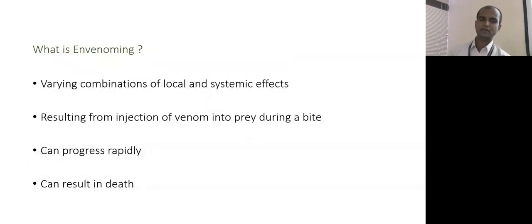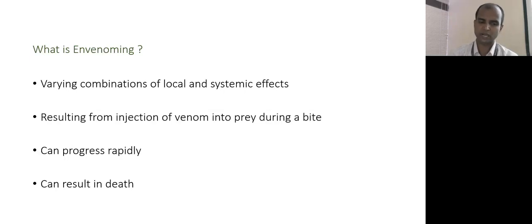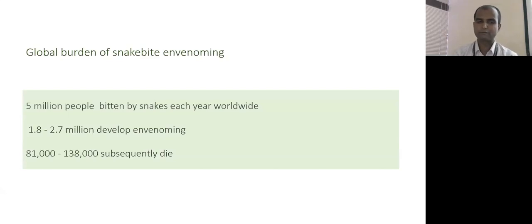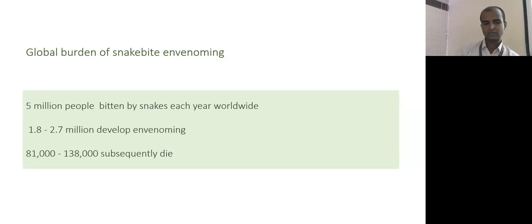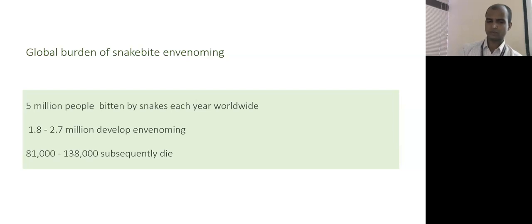Today we will discuss the principles of snake bite management. Envenoming refers to varying combinations of local and systemic effects resulting from injection of venom during a bite. Envenomation can progress rapidly and result in death. Globally, 5 million people are bitten by snakes every year, of which 1.8 to 2.7 million develop envenoming, resulting in 80,000 to 130,000 deaths from severe systemic envenomation.